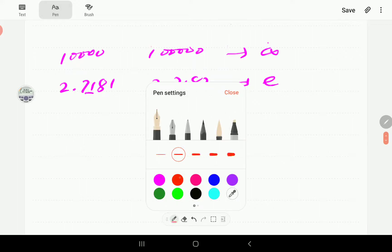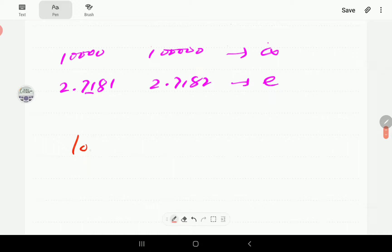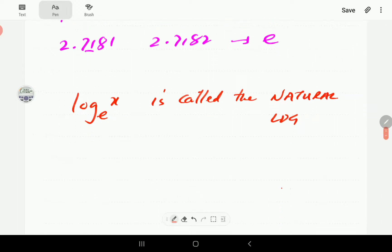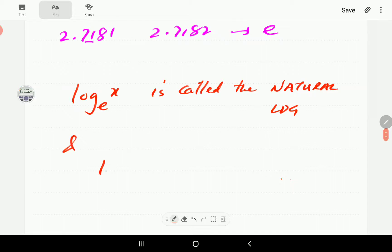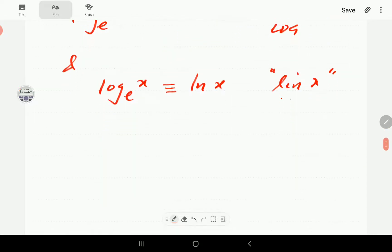Log x to base e is called the natural logarithm. In terms of notation, log x base e, we simply write as ln of x, which is pronounced lean x. So the l is for logarithm, the n is for natural.